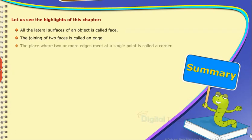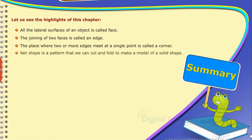The place where two or more edges meet at a single point is called a corner. Net shape is a pattern that we can cut and fold to make a model of a solid shape.